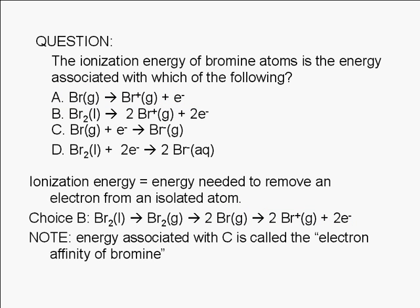By the way, choice C is the opposite of choice A. The energy associated with this process is called the electron affinity of bromine. The electron affinity of an atom is the energy associated with the gaining of one electron by an atom.